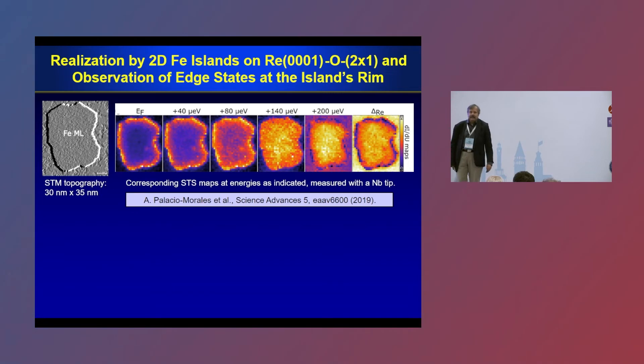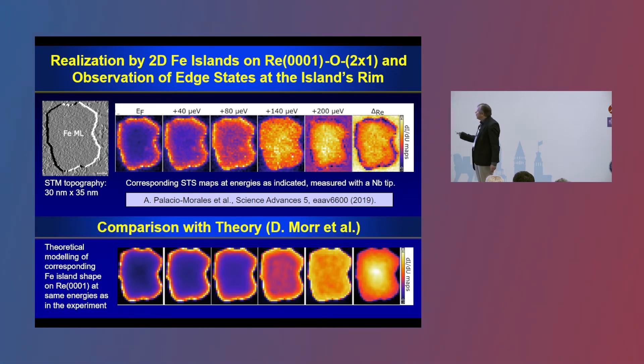So, the iron island becomes superconducting due to proximity with the rhenium substrate. And you see how the system develops if you go higher in energy towards the coherence peaks of the superconducting rhenium. And that was in beautiful agreement with the theory by Dietmar and co-workers from Chicago.